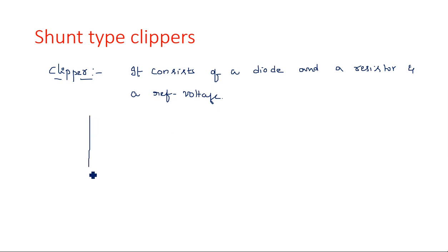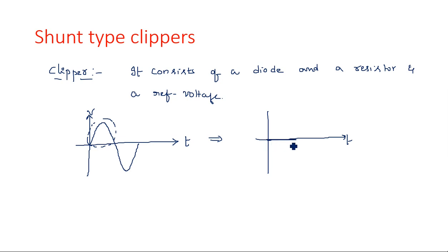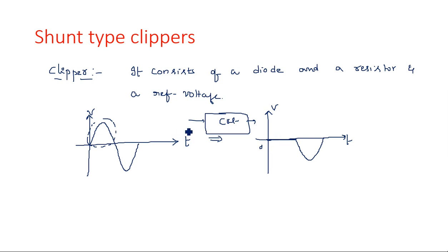Suppose the input is a sinusoidal signal. This is the time axis and this is the voltage. For this type of signal, if you want to clip the positive peak amplitude, then the output signal will have the positive peak clipped and only the negative peak remains. This type of circuit which converts the waveform by eliminating the positive peak is known as a clipper.